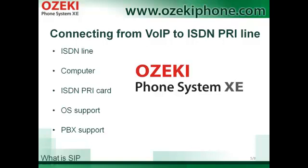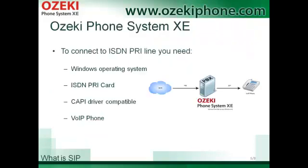Asakifon System X is the best choice for a VoIP PBX because it supports CAPI driver compatible ISDN cards. It is able to meet all requirements if you would like to connect your VoIP network to an ISDN PRI line. It is a Windows-based software, compatible with CAPI driver compatible ISDN devices and cards, and you can connect SIP-based VoIP phones to this PBX easily.